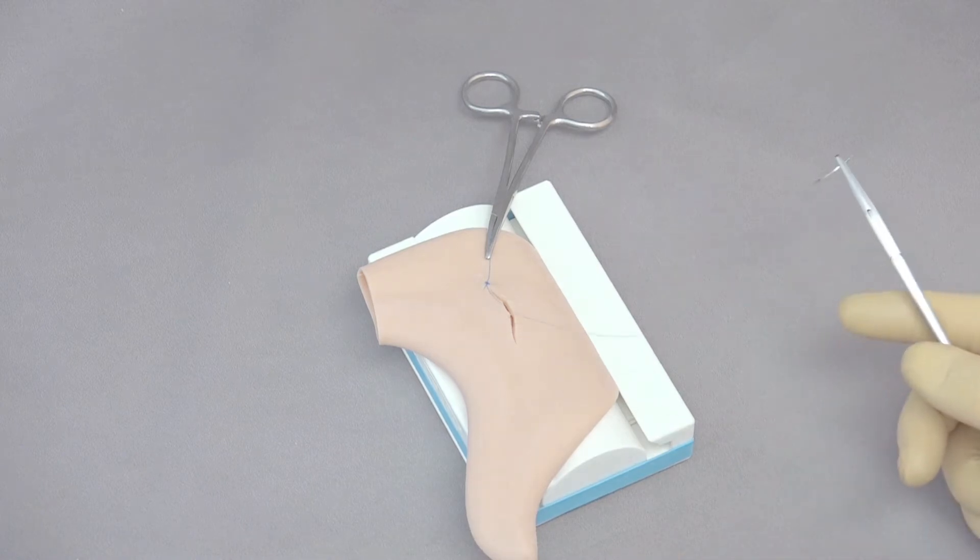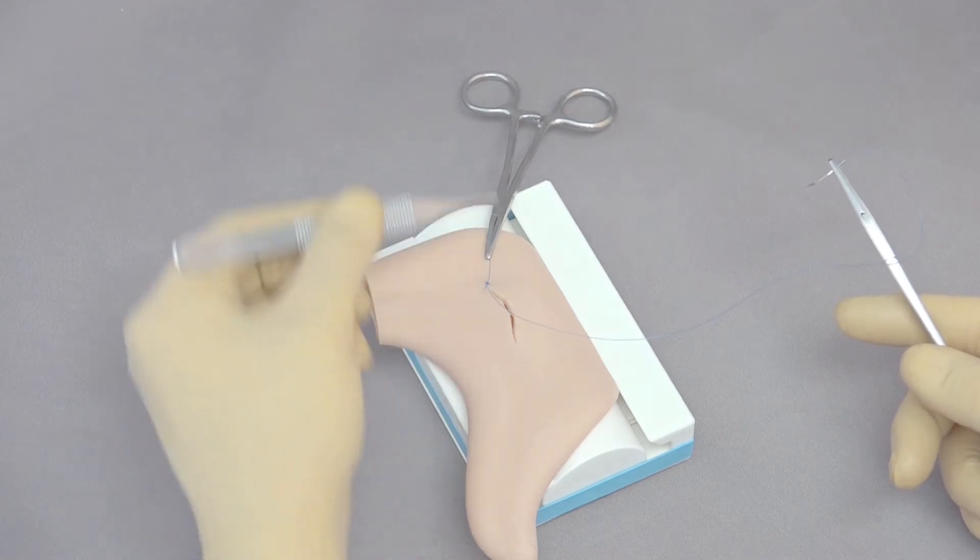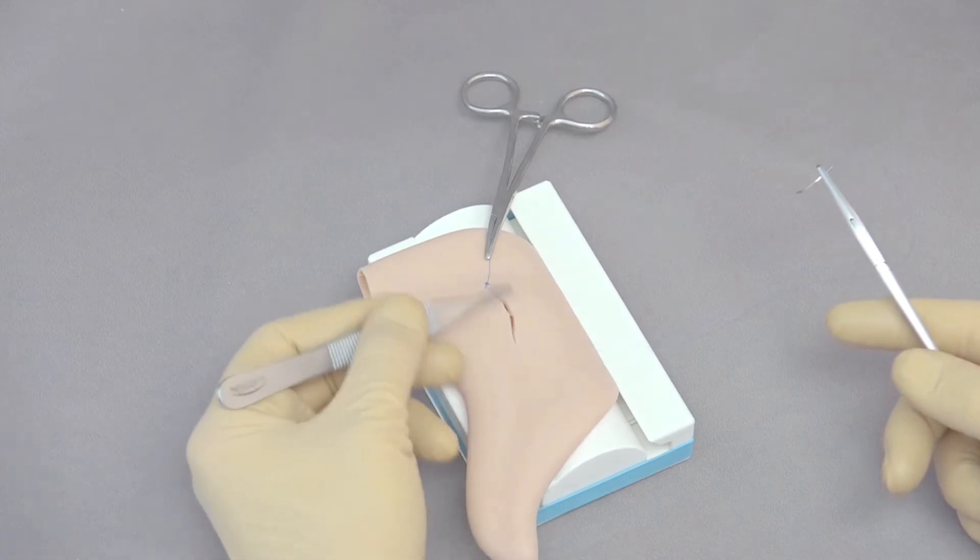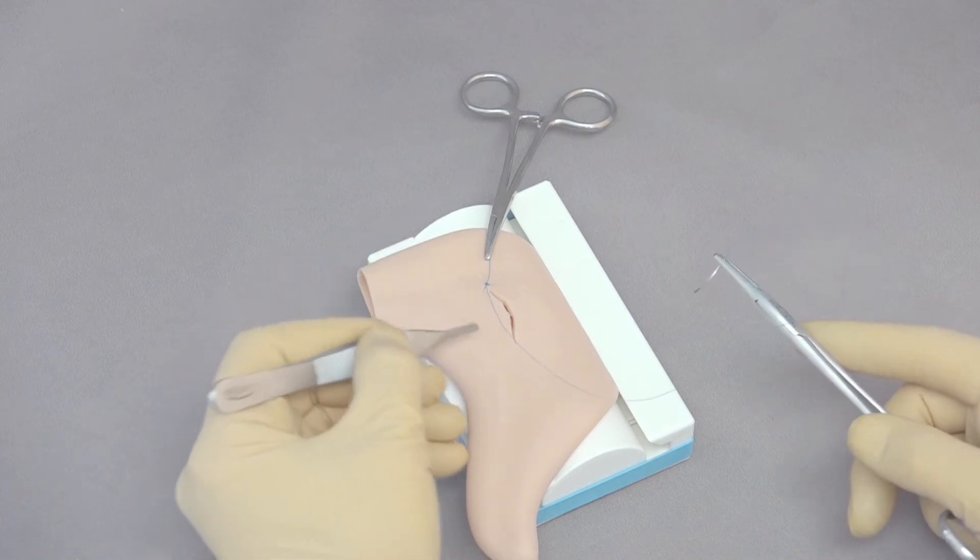Now we're going to continue this with a continuous pattern. I've started my pattern always when I'm doing a continuous at the far end of the incision, and work back towards my body, that gives me the finest motor movement, as well as the best ability to actually keep a nice, even suture line.